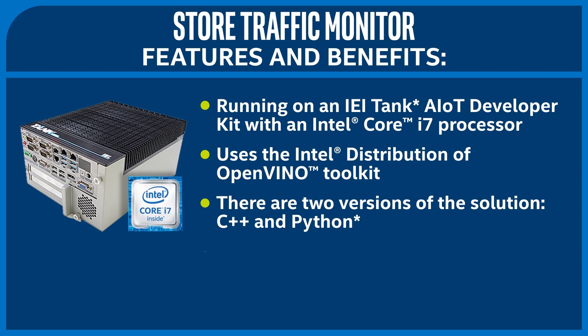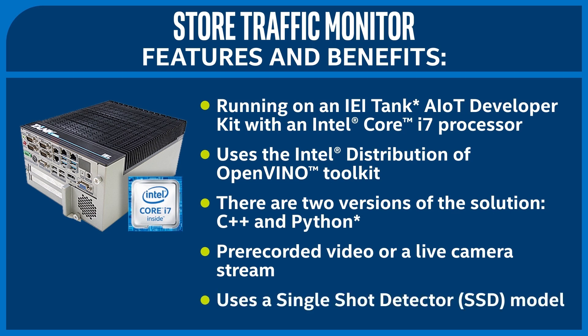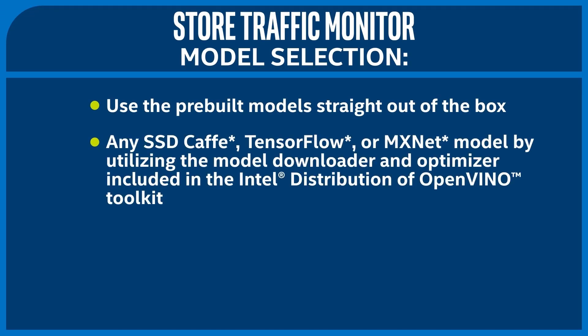This solution is able to either use pre-recorded video or a live camera stream. To do the person detection, the Store Traffic Monitor uses a single-shot detector, or SSD. You can use any model that has the input and output format of an SSD. Some models are trained to detect different objects, some run faster or slower, so you'll have to find one that fits your specific needs. You can use the pre-built models straight out of the box, or any SSD Caffe, TensorFlow, or MXNet model, by utilizing the model downloader and optimizer included in the Intel distribution of OpenVINO toolkit.